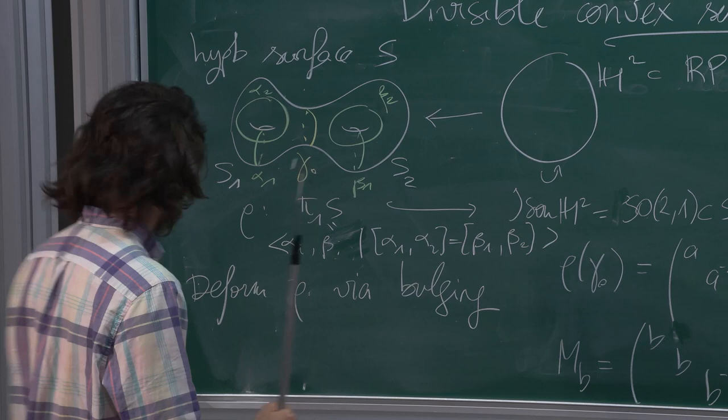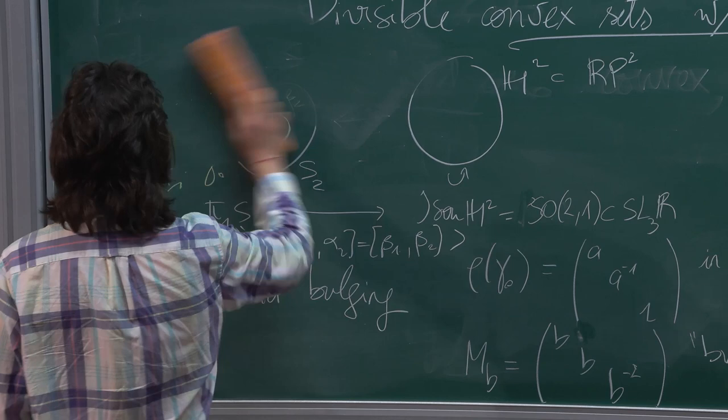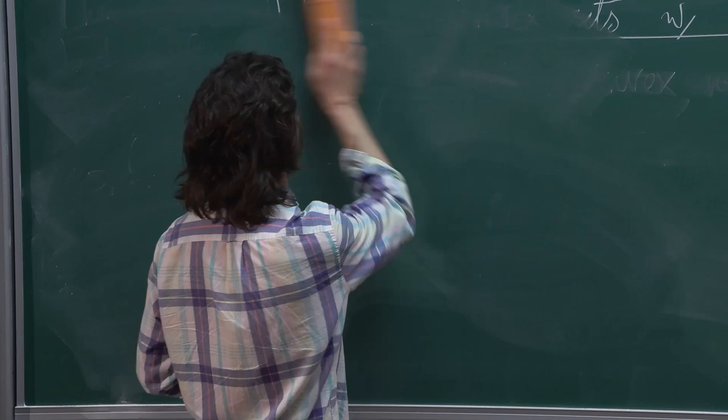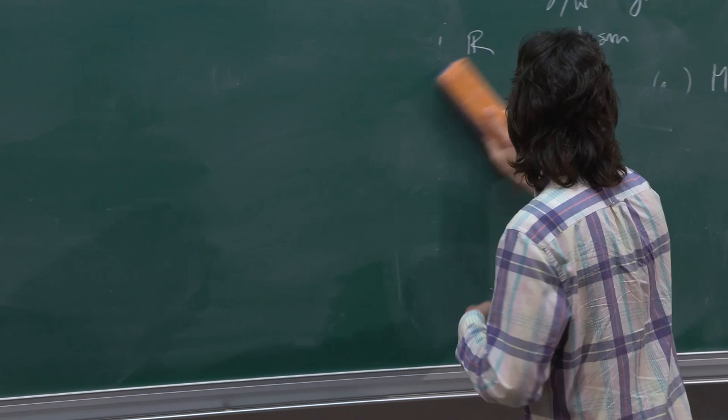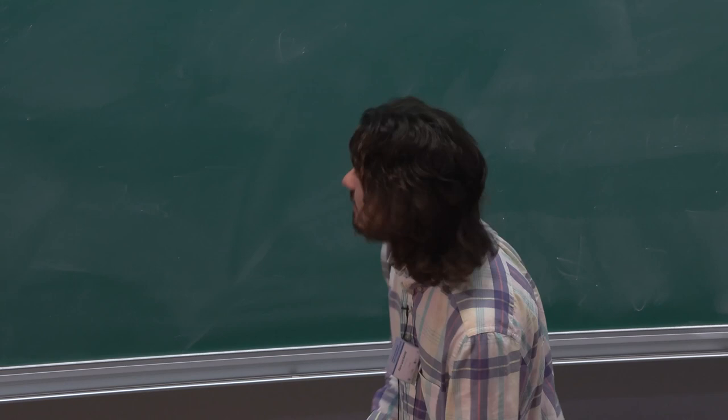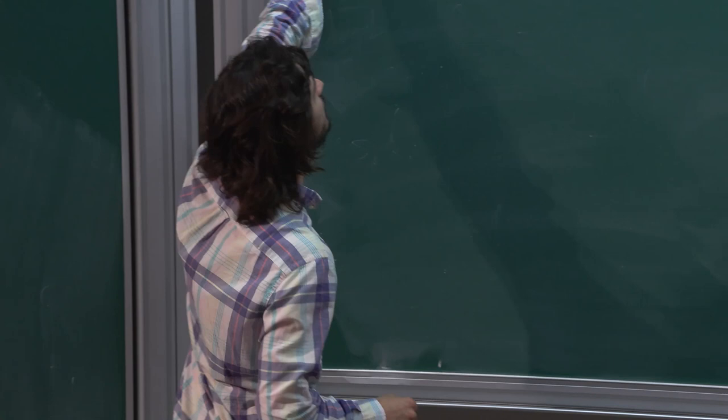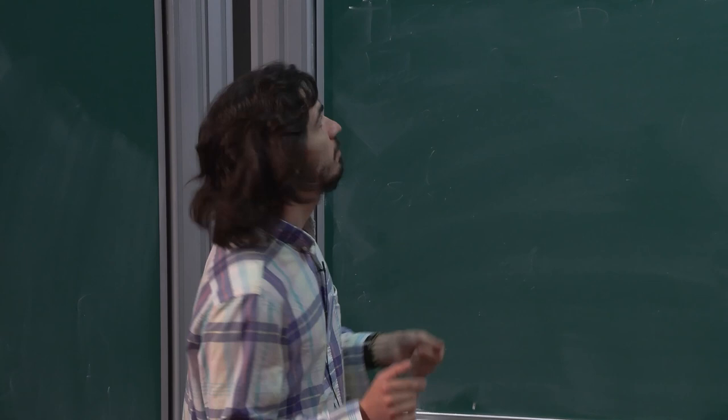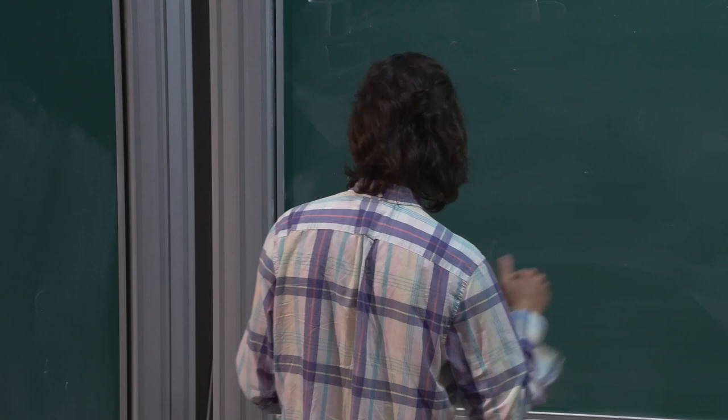Bulging is very important — we will talk about it again later. Regarding the limit set question: the limit set is well defined, but sometimes it's not the full boundary. I will come back to it later.